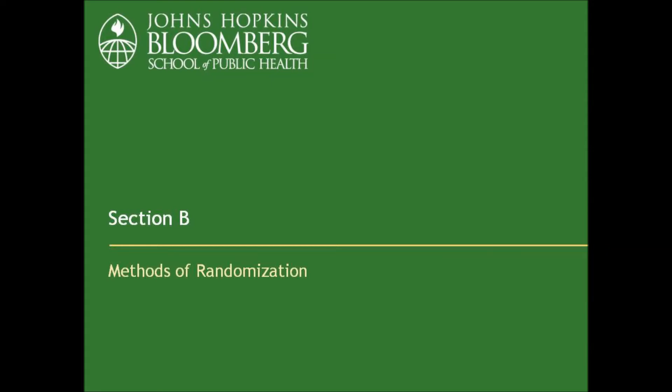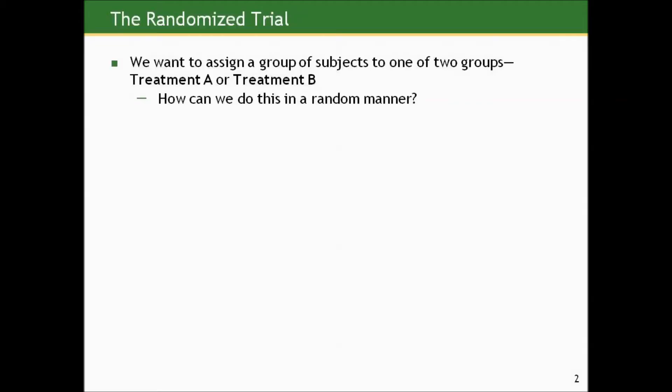Okay, let's talk about some methods of randomization, just to try and understand how we bring in chance to help us assign persons to different groups. Let's start with the example of two groups, and all these ideas can be generalized to more than two groups. Suppose we want to assign a group of students to one of two groups, treatment A or treatment B for example. How could we do this in a random manner?